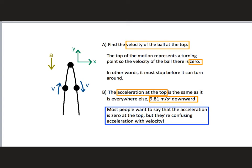Part B asks what the acceleration at the top would be. A lot of people would conflate the meaning of velocity and acceleration together. If asked what's the acceleration at the top, a lot of people want to say it's zero because they're thinking about velocity, not acceleration. You have to keep these things straight.